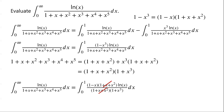The factor (1 plus x plus x²) in the numerator and that in the denominator cancel. So we can now write this equals the integral from 0 to 1 of (1 minus x) times ln(x) over (1 plus x³), dx.